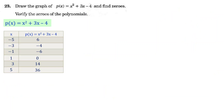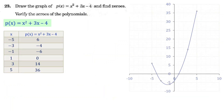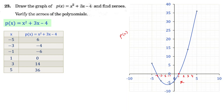We can now plot this table. On the graph, the horizontal axis is x and the vertical axis is p(x). Plot the points from the table. Where p(x) = 0, the corresponding x values are the zeros of the polynomial.